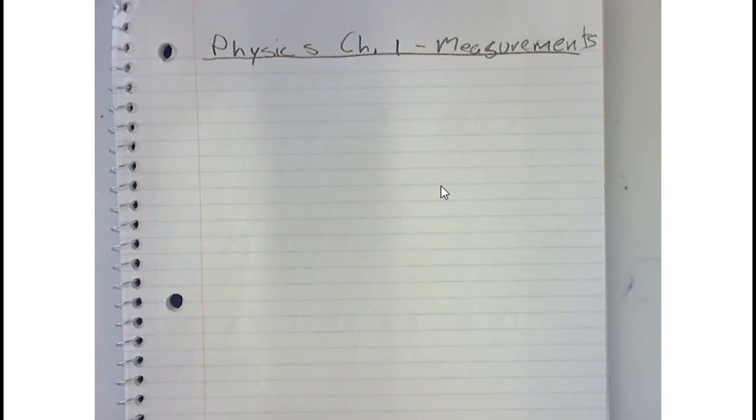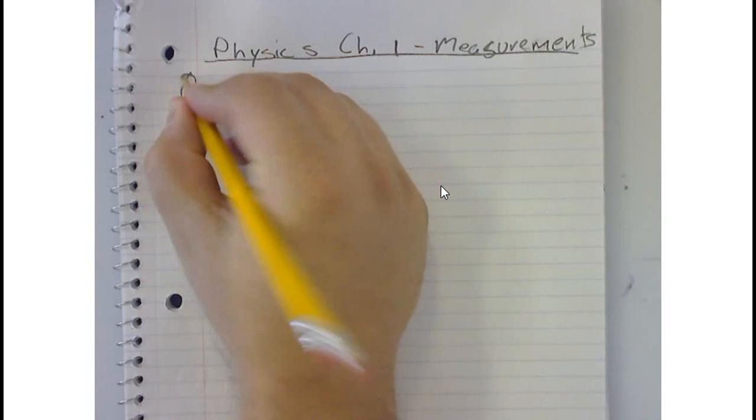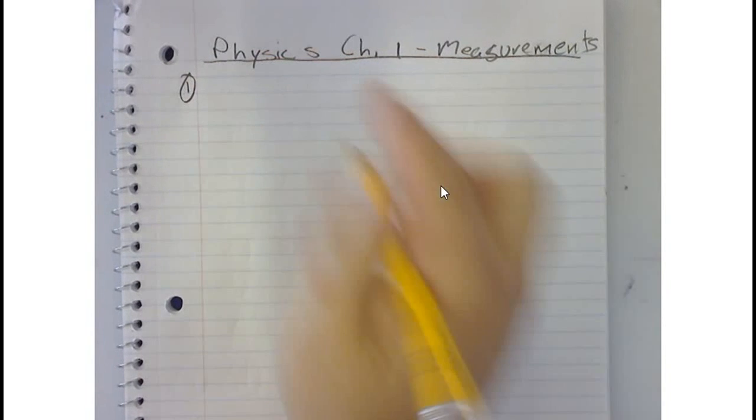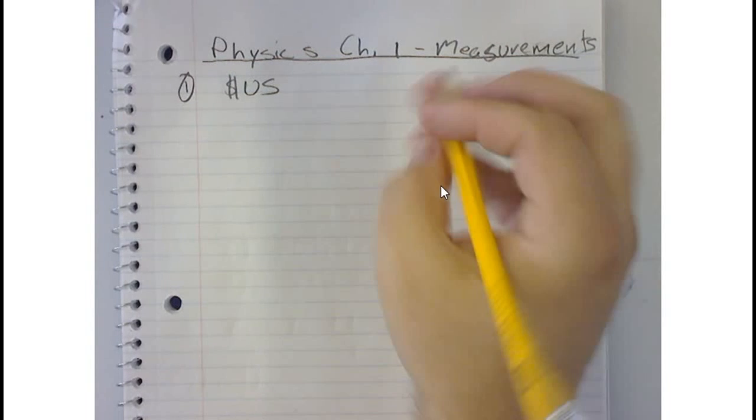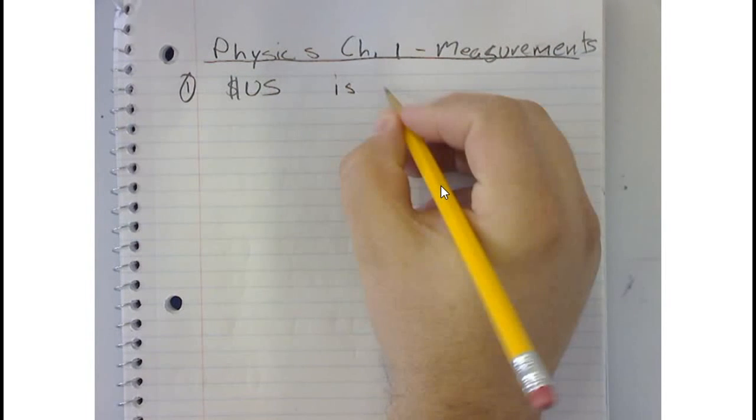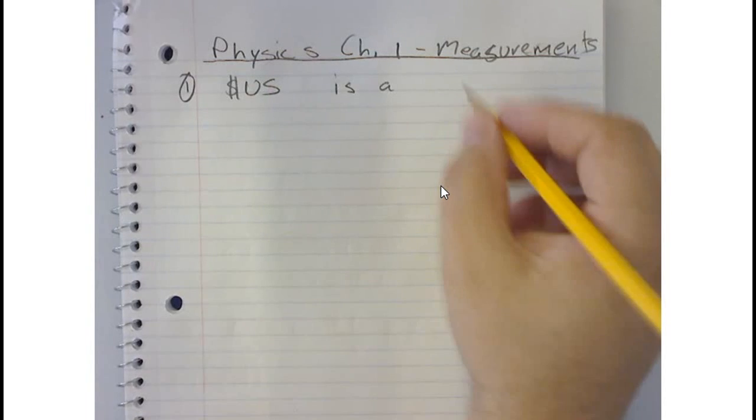So problem number one says that our current money situation in the US is what we call decimal, but it's a base-10 system. That's how we count - we count in bases of 10.